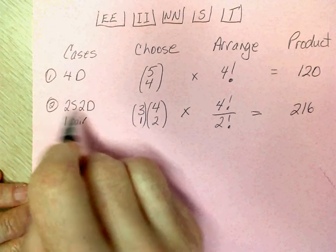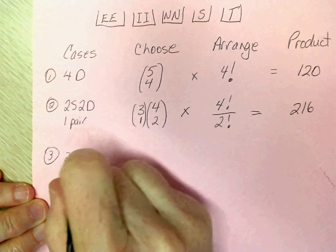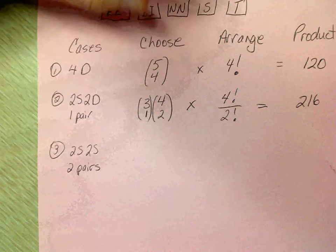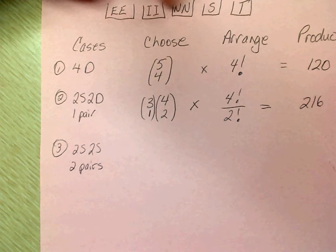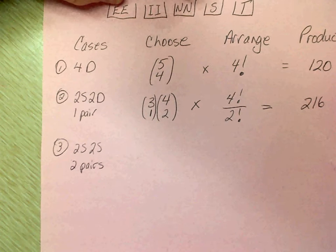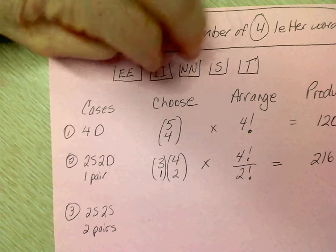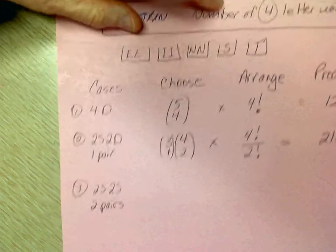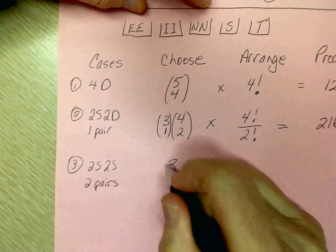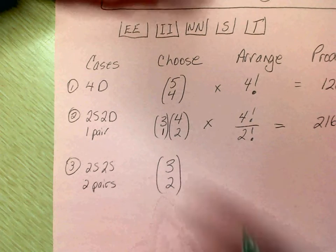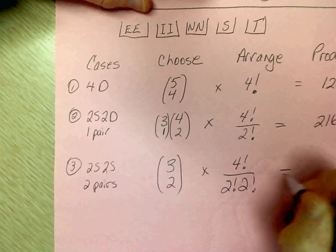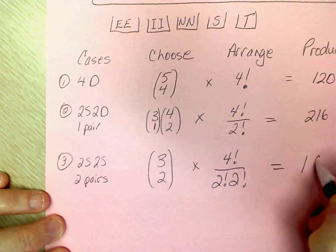So the next scenario is two same, two same, or two pair. This is the same as two pairs. So, there's three buckets I can go to to get two pairs. I could pick E, E, I, I, or E, E, N, N, or I, I, N, N. So, there's three ways I can choose two pairs. So, there's three buckets I can go to to get a pair, three choose two. I only need two pairs. Now, it's times four factorial over two factorial, two factorial, and that is equal to 18.